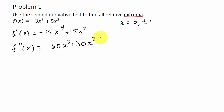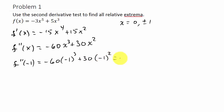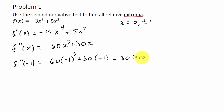So what we're going to do now is evaluate each one of these numbers. f double prime of negative one is negative 60 times negative one cubed plus 30 times negative one. That's going to be positive 60 minus 30, which is 30 — that is greater than zero. So since it's positive, we have a relative minimum.